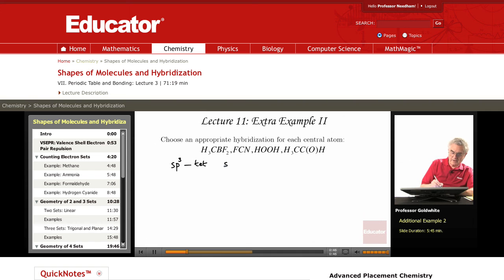SP2 hybridizations leave unhybridized 1p orbital. The shape associated with an SP2 hybridization is trigonal planar.